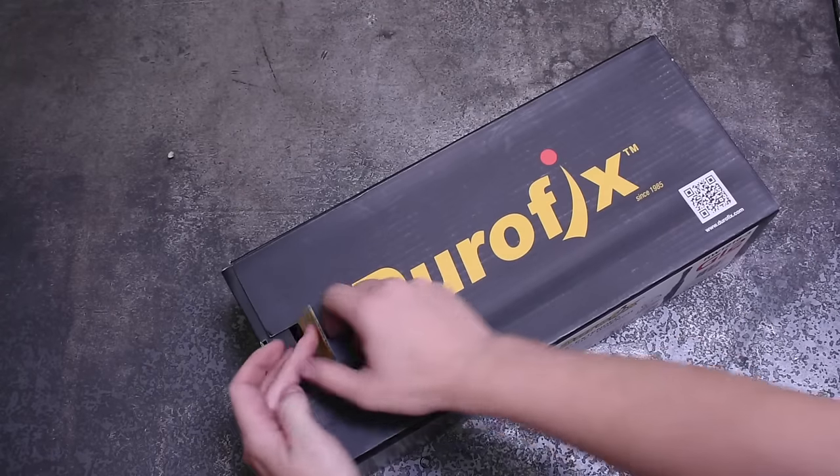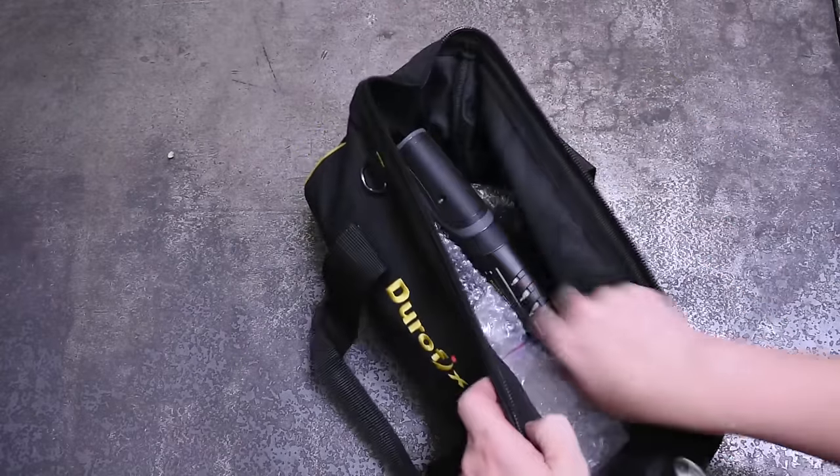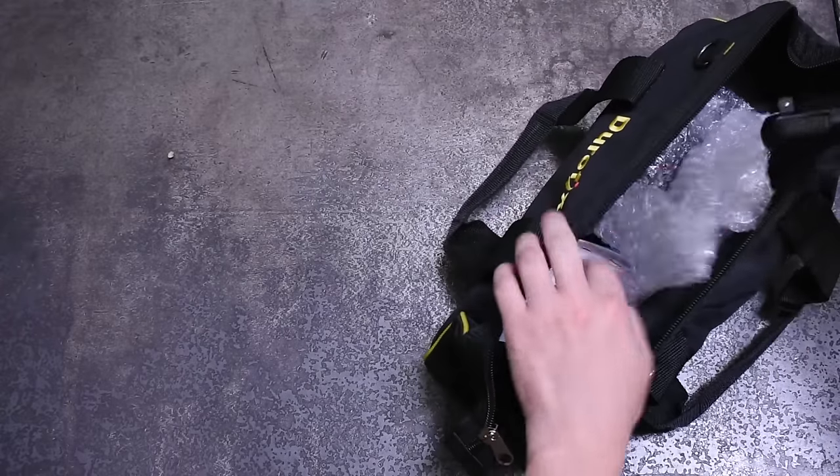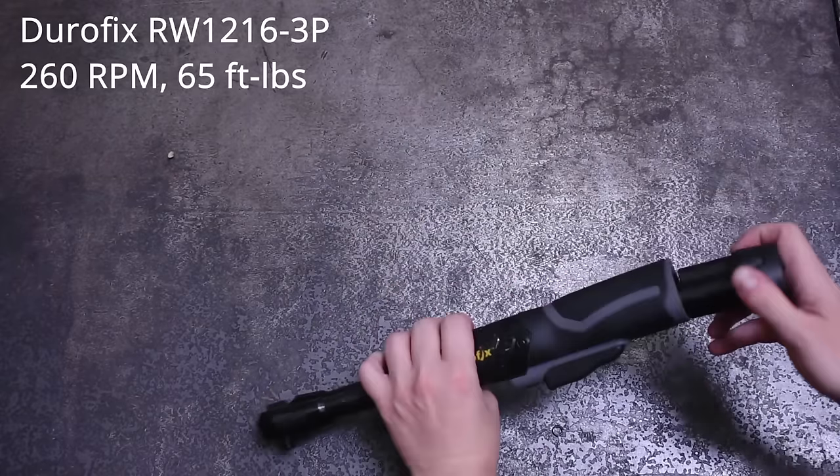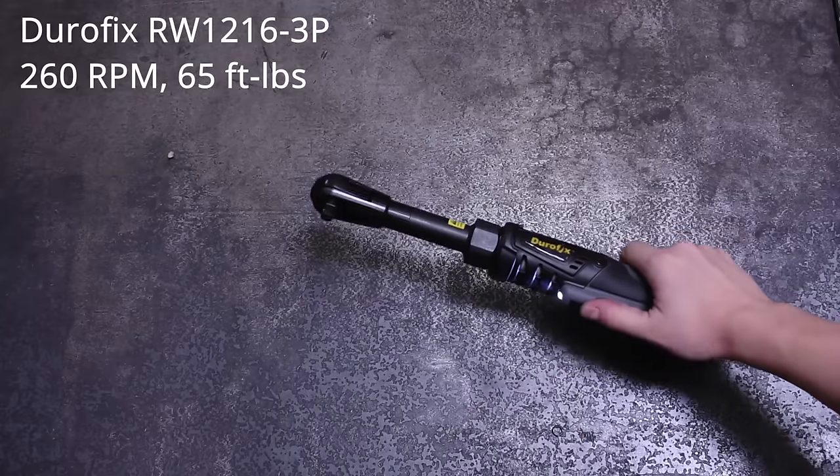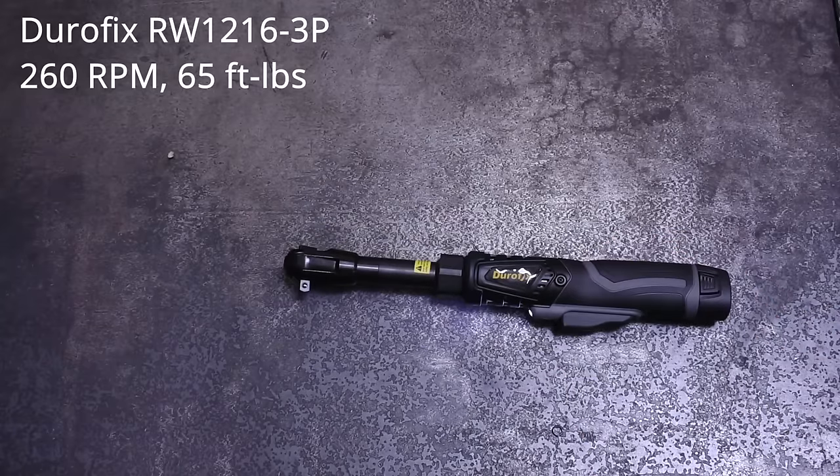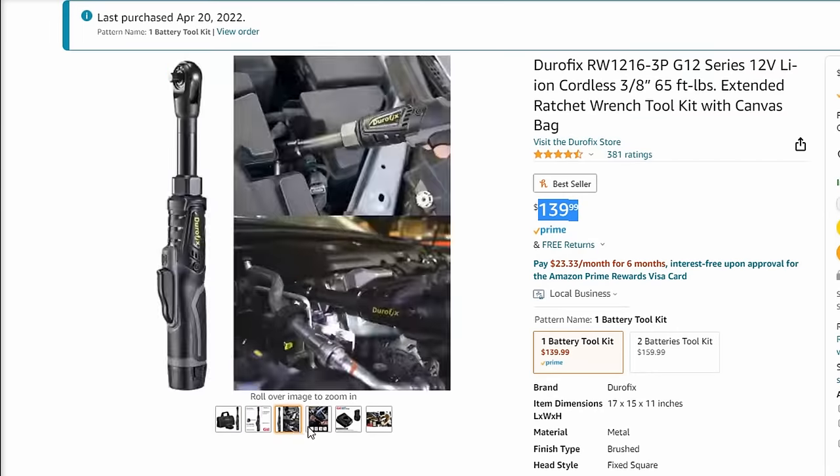Next up is a ratchet that pumps things up in the specs, way up is the Durofix RW 1216-3P. This one boasts 260 RPM up from the 230 of the Husky and 65 foot pounds of torque, which is just over double the Husky as well. You'll be paying for those specs about $140 or roughly $110 bare without a battery and charger.